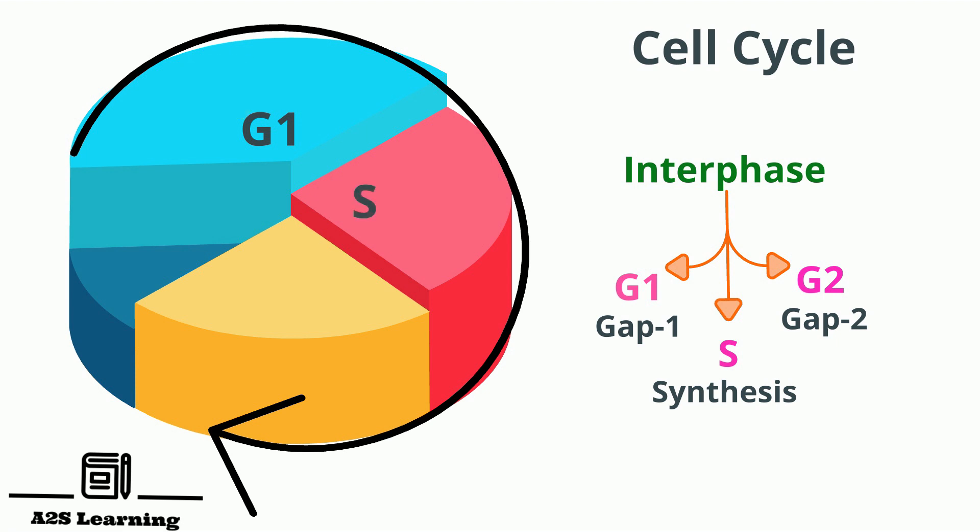The S phase is the interval between G1 and G2 and lasts for 8 hours. During this phase, DNA synthesis or replication takes place. As a result, the two daughter cells formed during cell division will have identical genetic material.